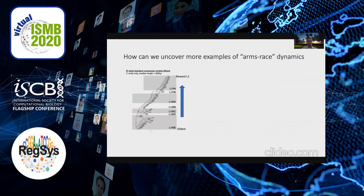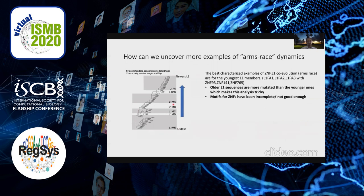To find more examples of arms race dynamics in some of these older LINE elements, there are challenges: these older LINE elements are more mutated, making analysis harder, and the motifs of zinc finger transcription factors have not been very good. Our new improved motifs could help us with this kind of analysis.